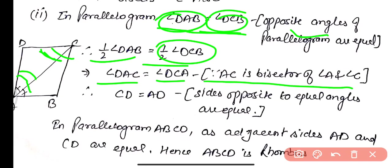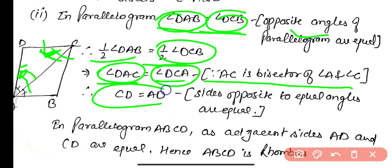So angle DAC equals angle DCA. Since AC bisects angle A as well as angle C, half of each angle is equal. So in triangle ADC, two angles are equal — DAC and DCA — therefore their opposite sides are equal: AD equals CD.